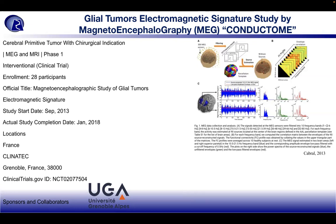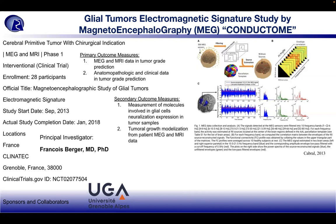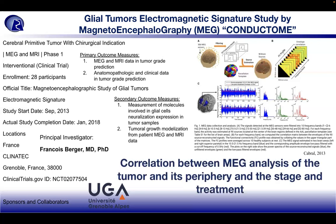Primary outcome measures were MEG and MRI data in tumor grade prediction, and anatomopathologic and clinical data in tumor grade prediction. Secondary outcomes included measurements of molecules involved in glial cell neutralization expression in tumor samples, and tumor growth modelization from patient MEG and MRI data. The correlation between MEG analysis of the tumor and its periphery with the stage and treatment were done in this clinical trial. The conductome is the totality of factors that influence behavior, emphasizing its utility as a unifying concept for a systemic view of a living organism.